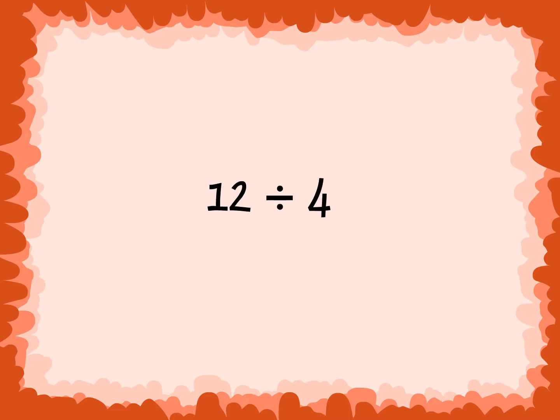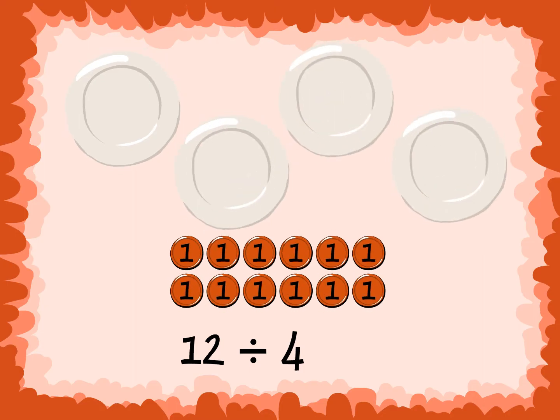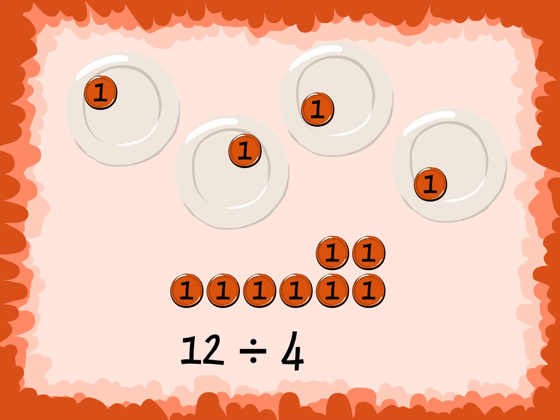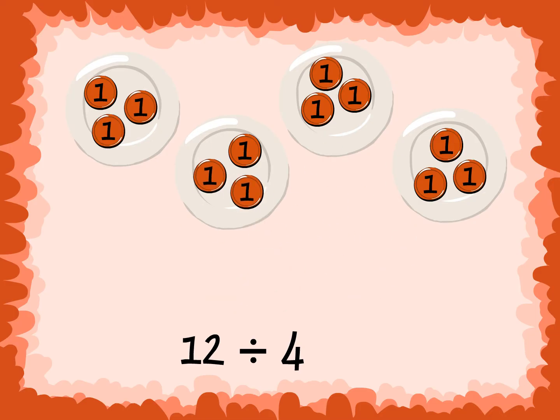12 divided by 4. We start with 12 pennies and 4 plates. We put 1 penny onto each plate. Continue putting 1 penny in each group until all pennies are used up. Now there are 3 pennies on each plate. So 12 divided by 4 equals 3.